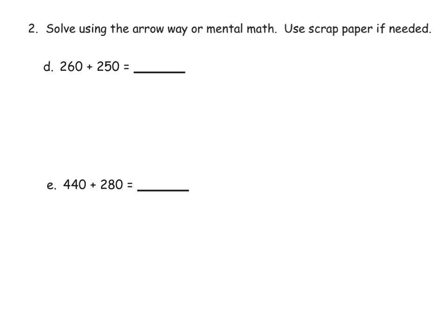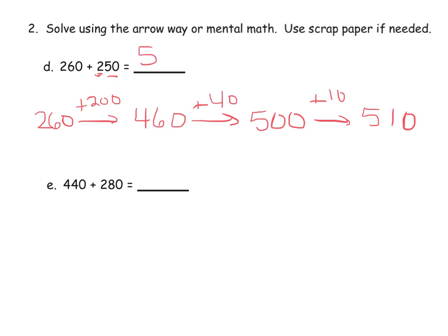So a couple more practice problems using the arrow method. 260 plus 250. So let's start with 260. I might start by adding 200. And that'll get me up to 460. Now I've added the 200. Now I've got 50 more to add. But let's start by adding just 40. Because that will bump me up to the next milestone number, which is 500. And then I can add in the final 10, which gives me 510. Of course, there's a variety of ways I could have solved that problem.